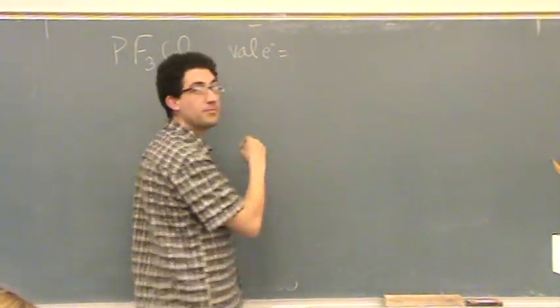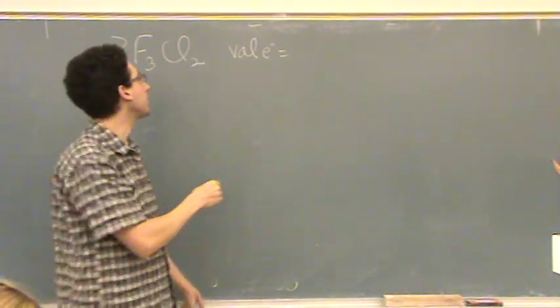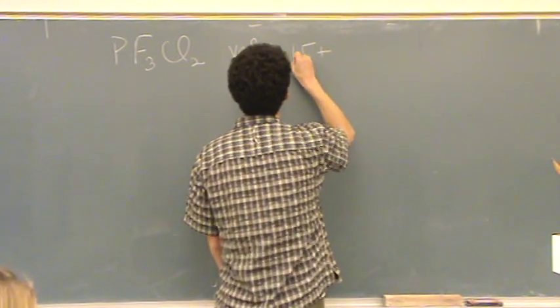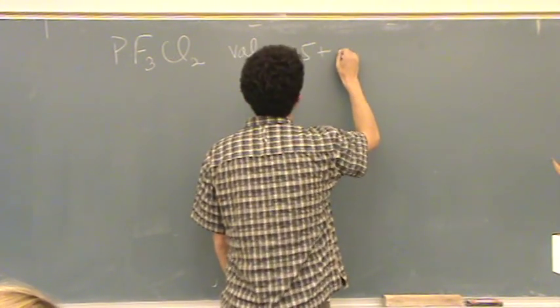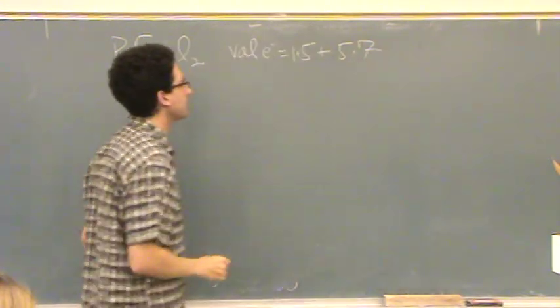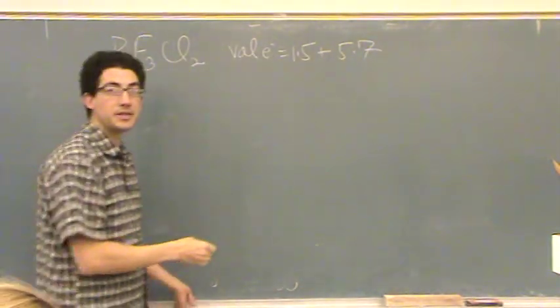Valence electrons, same concept for Lewis structure, doesn't change, equals five for phosphorus, and there's one of them, so one phosphorus at five, and then there's five halogens in column seven. So that's going to be 40.